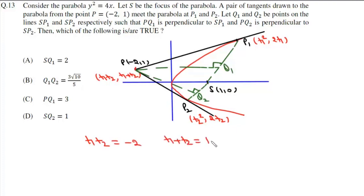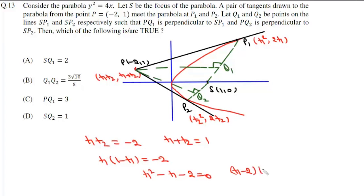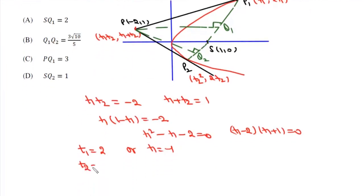And T1 plus T2 equals 1. Substituting T2 equals 1 minus T1, we get T1 times (1 minus T1) equals minus 2, or T1 squared minus T1 minus 2 equals 0. Factoring gives (T1 minus 2)(T1 plus 1) equals 0, so either T1 is 2 or T1 is minus 1. If T1 is 2, then T2 is minus 1.